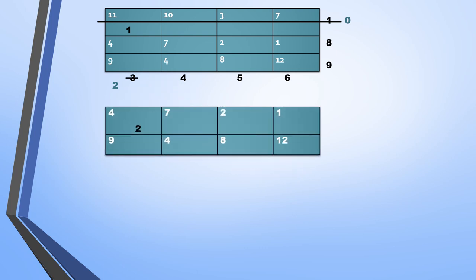Again we check the next active top-left cell, which has cost 4. The supply is 8 and the demand is 2. Since demand has been completely met, we strike that entire column. Supply becomes 8 minus 2 equals 6, and demand becomes 2 minus 2 equals 0.